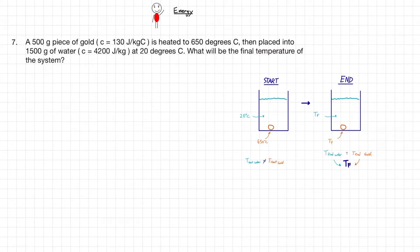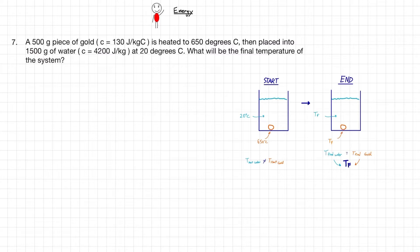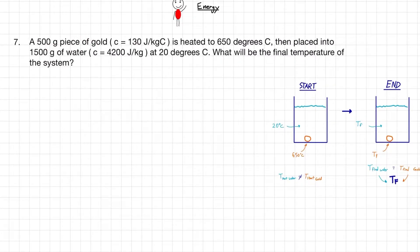This next example is going to be a problem using the conservation of energy, and specifically we're going to be using thermal energy — energy associated with heat. As we know, heat is a form of energy, and the law that energy cannot be created nor destroyed applies to heat energy. We have a piece of gold at a certain temperature placed into a certain amount of water at a different temperature, and we're asked to find the final temperature of the system.